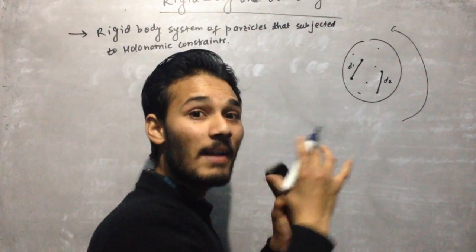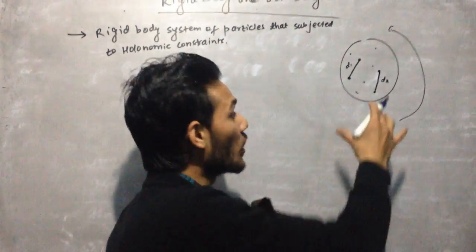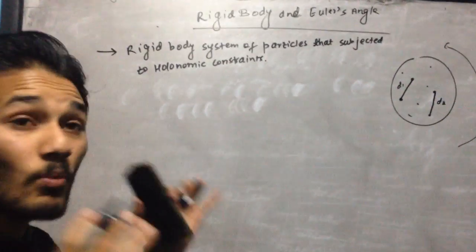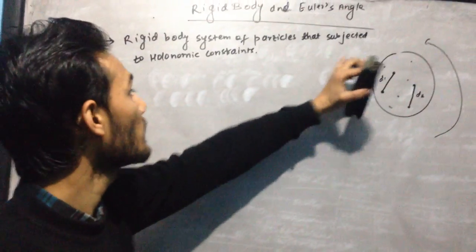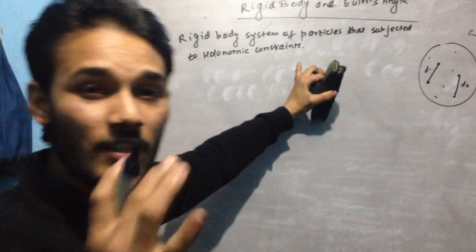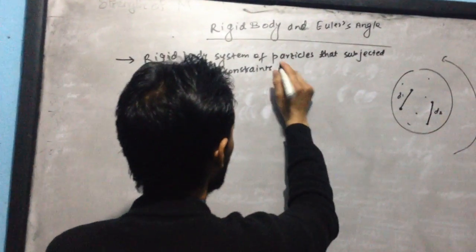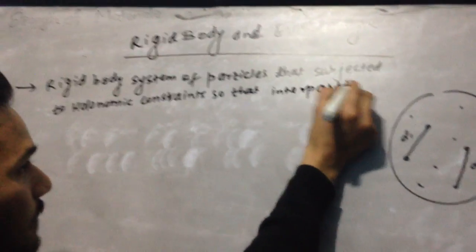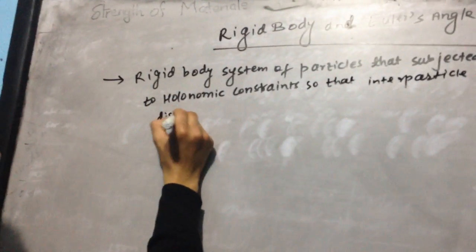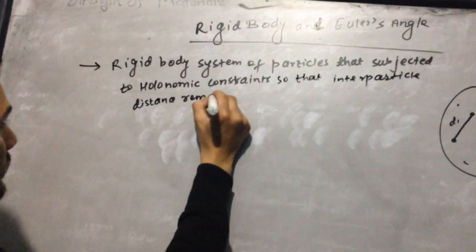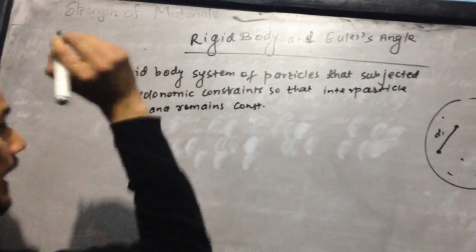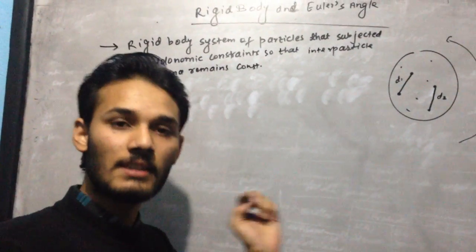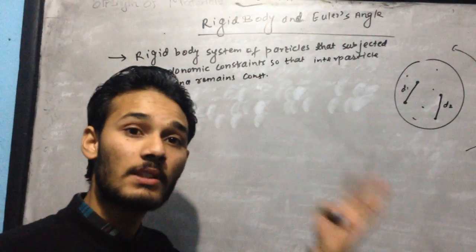What constraint is applied here? The holonomic constraint is applied. So the rigid body is a system of particles subjected to the holonomic constraint, so that the interparticle distance remains constant. The rigid body is any body whose interparticle distance remains constant and that is subjected to the holonomic constraint.